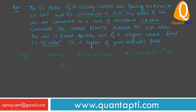Calculate the charge flowing through the galvanometer when the coil is pulled quickly out of the region where field is two point five weber per meter square to a region of zero magnetic field. This question is exactly like the previous question, so if you do that question, you can easily solve this one.